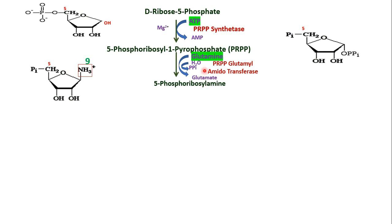To remember this step, you need to recall which substrates are added. Here, glutamine is added. It was phosphoribosyl pyrophosphate; when glutamine gives its amide, it becomes phosphoribosyl amine — the pyrophosphate becomes an amine. So the product is phosphoribosyl amine, and because the amido group is transferred from glutamine, the enzyme is PRPP glutamyl amidotransferase.